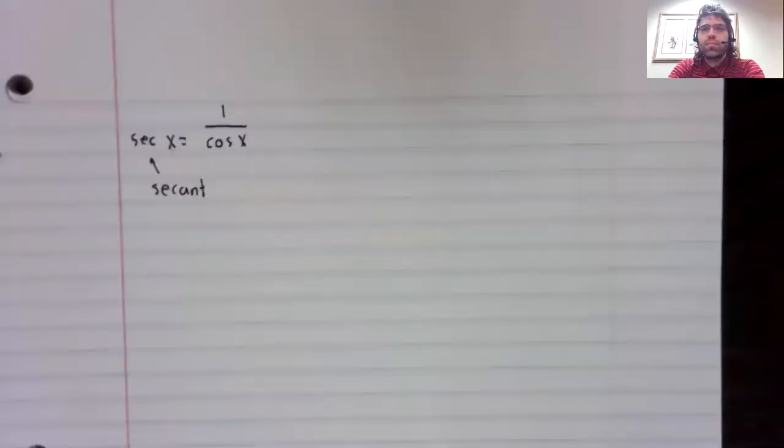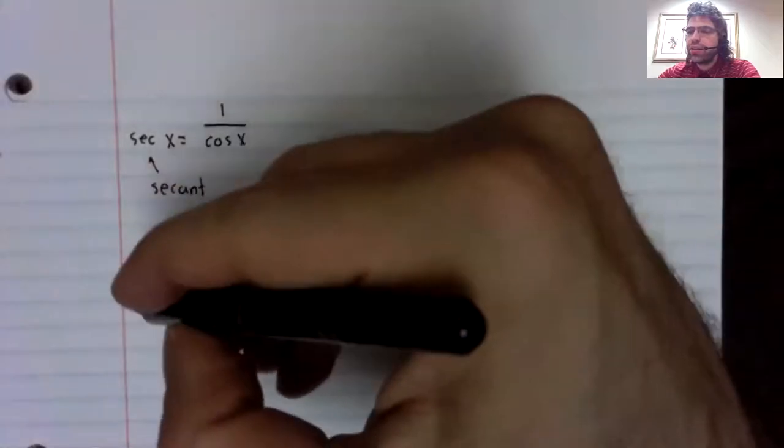There are three standard trig functions we haven't talked about. Of those three, the most important is the secant, although you can't really see what makes it important without dipping into calculus. The secant of x is the reciprocal of the cosine of x.